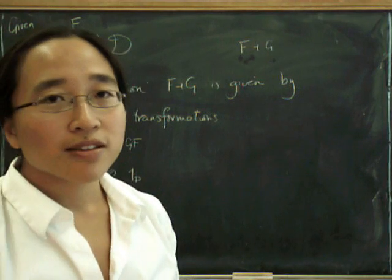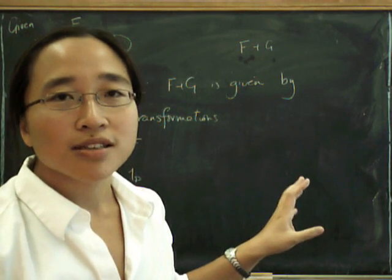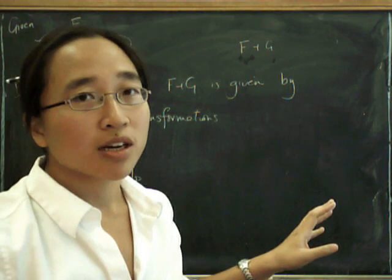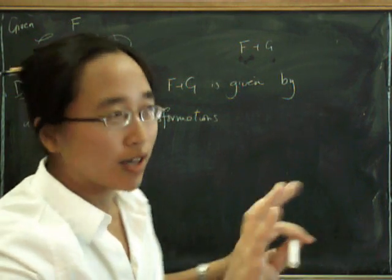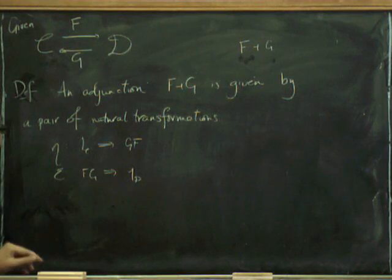Now, I'll tell you a secret, which is that if I ever write an adjunction that isn't F and G, I can't work out what's going on, and I have to translate in my head to F and G, and that's the only way I can work it out. Right, so what are the axioms?